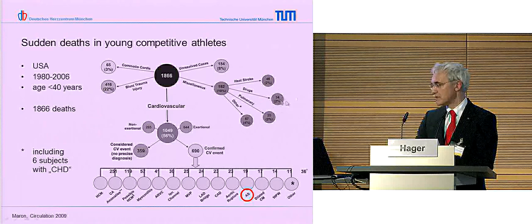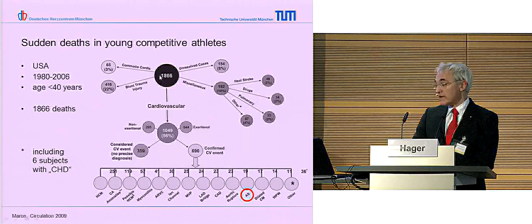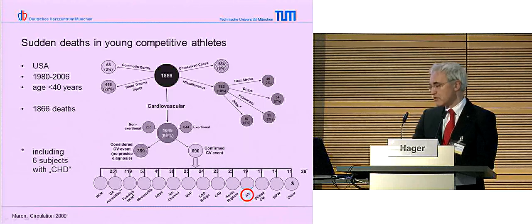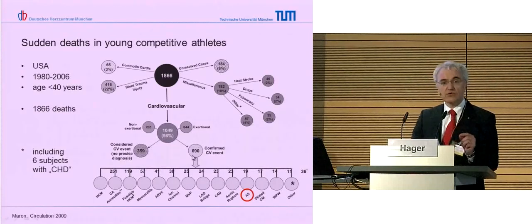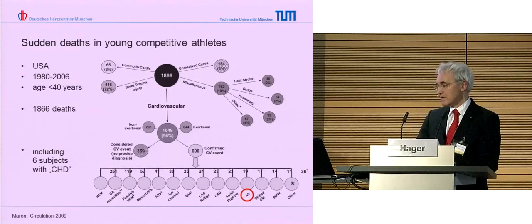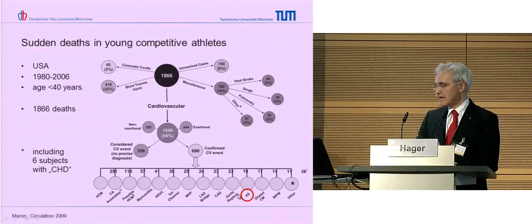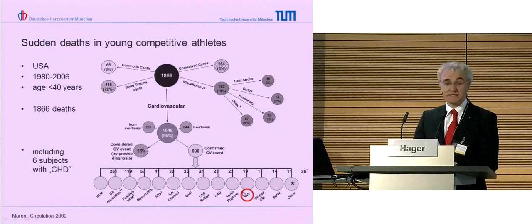Maybe doping is a little bit more there. And we have a lot of cardiovascular deaths. But only two-thirds of them - we know very exactly what is the reason for this cardiac death. And now we see the hypertrophic cardiomyopathy and several other things. And we will find, indeed, the aortic stenosis that causes 17 deaths in this series.